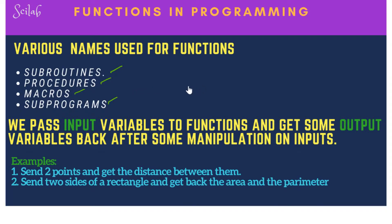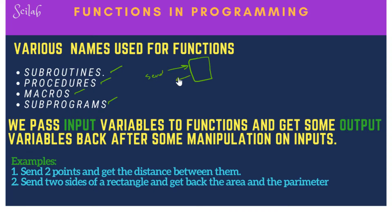Functions are basically a piece of code which we don't want to write again and again in larger programs. We write that piece of code once and then call it in our main programs whenever we need it. We send some variables to this code and get back certain variables from it. This piece of code is called a function.